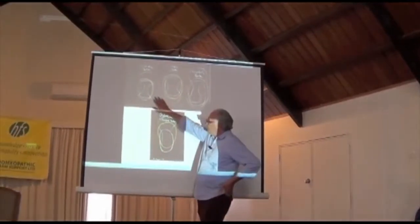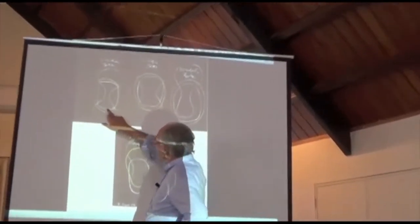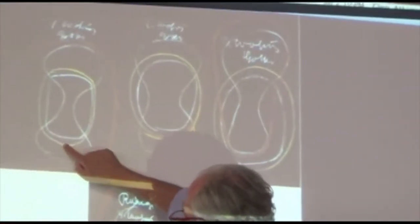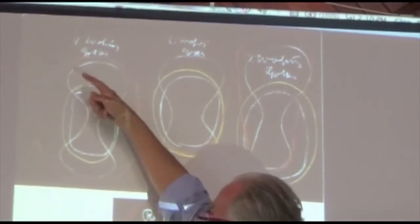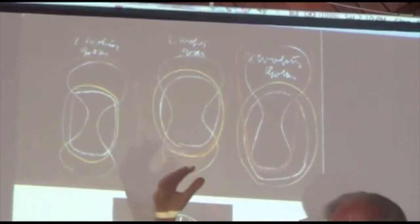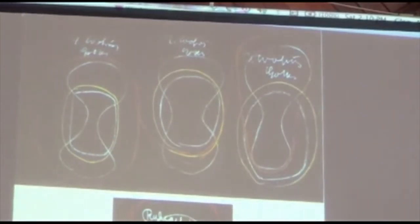So, this is the physical body here, and this is Steiner's representation of the etheric. Here's the astral body bringing in the movement, and here's the spirit which acts as this containing influence.